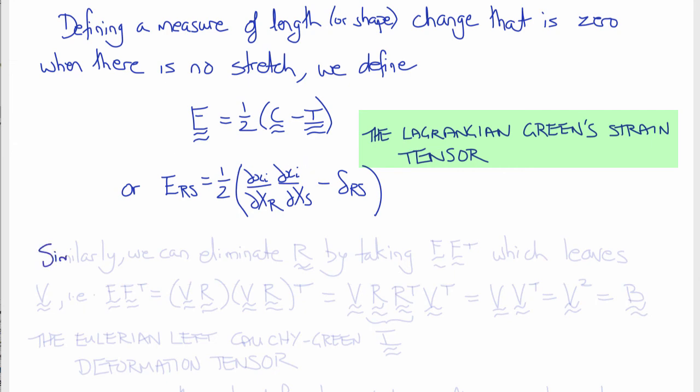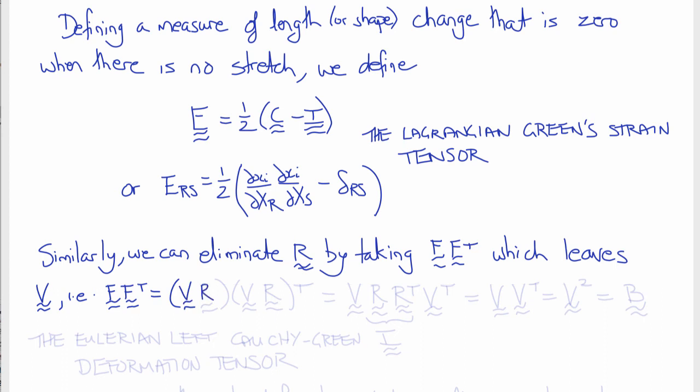This now, instead of leaving U, leaves V. That is, FF transpose equals VR times (VR) all transposed. And that's VR times R transpose V transpose. And again, we have RR transpose in the middle, which is I, the identity tensor, which leaves us VV transpose, or since V is symmetric, leaves us V squared. And this quantity is called B, the Eulerian left Cauchy-Green deformation tensor.